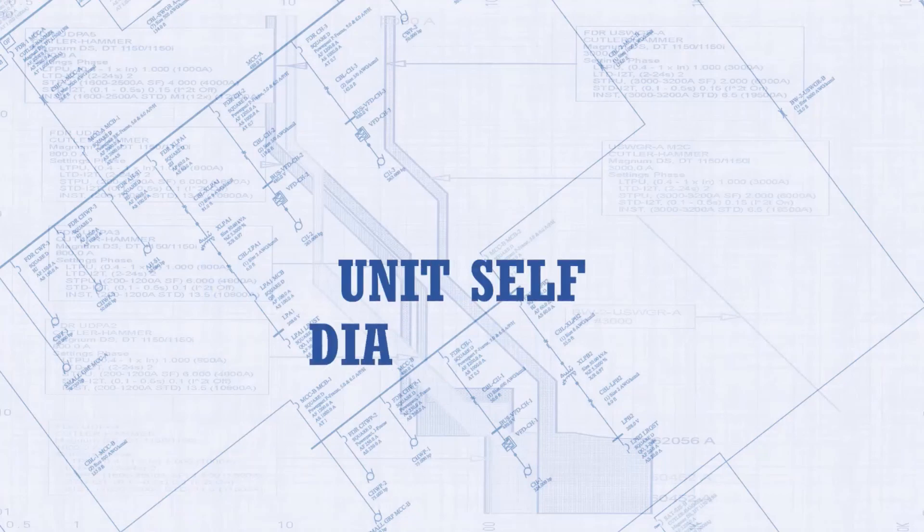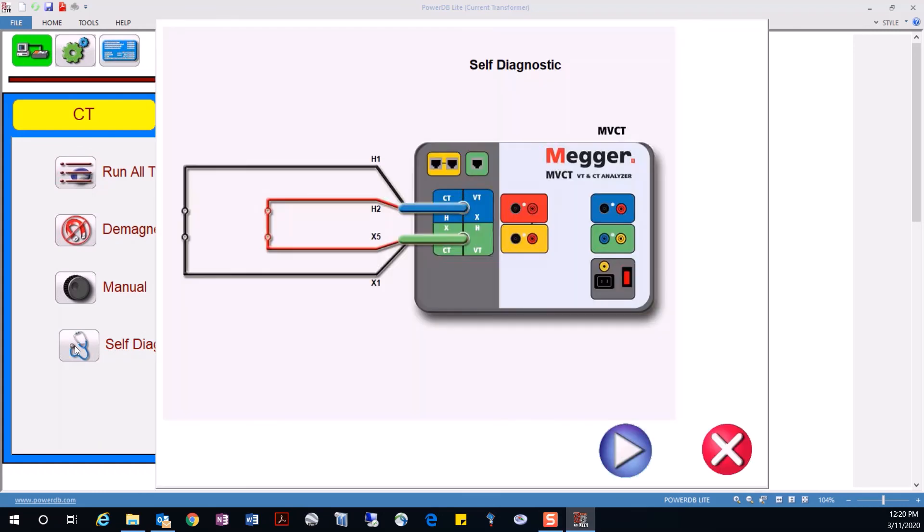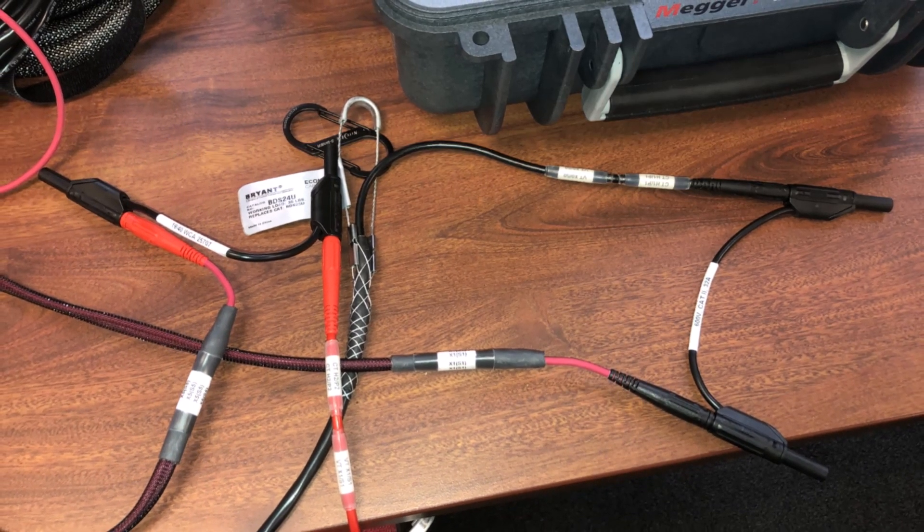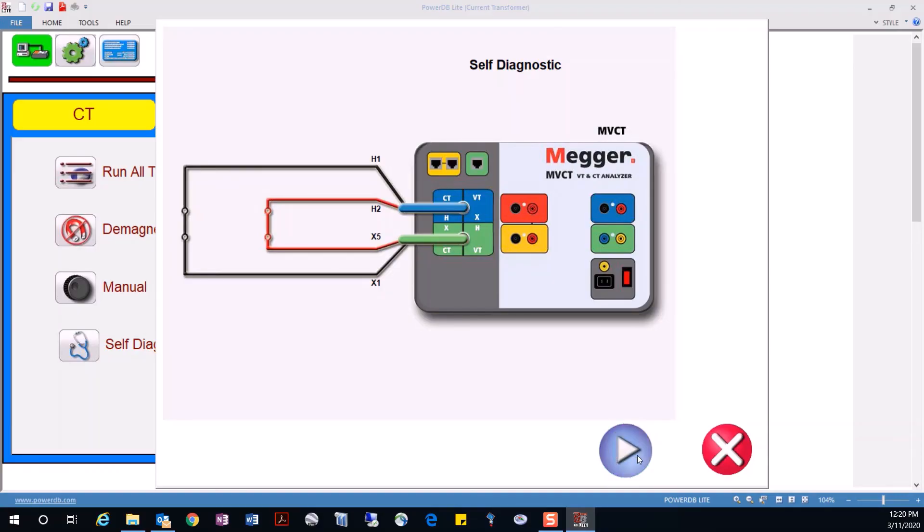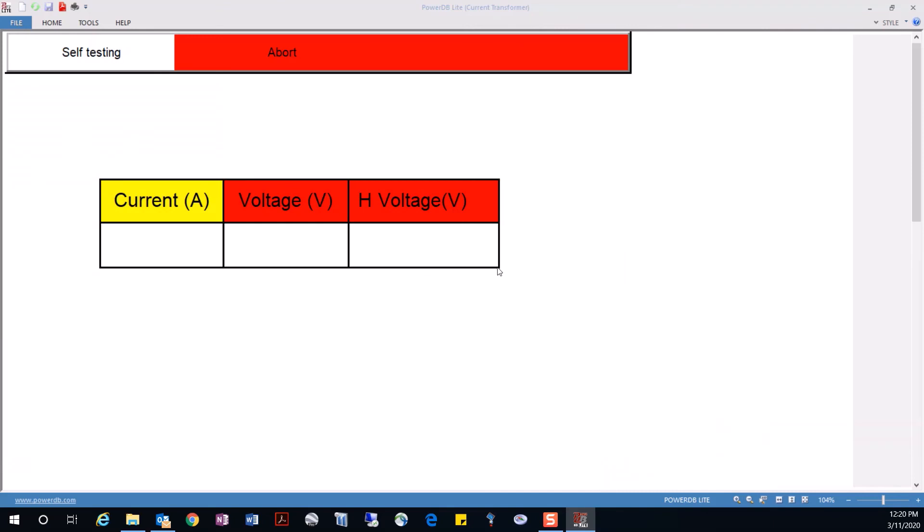Finally, the MVCT testing set has the capability of running self-diagnostics. We select the option from the main menu and confirm correct connection of the testing leads. This self-diagnostic check ensures that the unit internal voltage and current generators and meters are working properly. This diagnostic check should be run before and after each testing session to ensure personal safety and valid testing results.